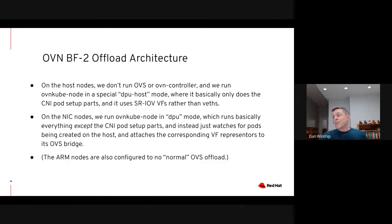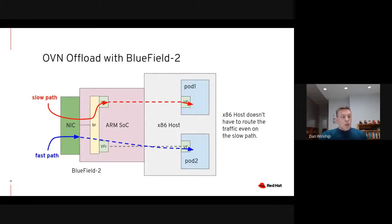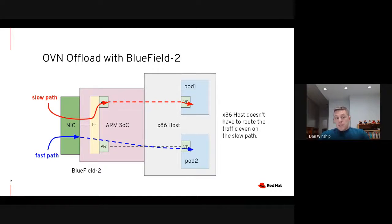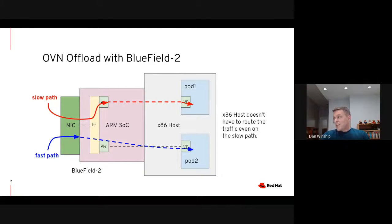The ARM nodes will also be configured to do the traditional OVS offload. So this is what we end up with — it's sort of a stretched-out version of the original offload diagram with the OVS bridge now running on the ARM system between the low-level parts of the NIC and the x86 host. The addition of the ARM system means that there's never any OpenFlow processing done on the x86 host. In the slow path, the packets go from the NIC to OVS running on the ARM system and then to a pod in the x86 system. In the fast path, the packets go from the NIC directly to the pod — the x86 host doesn't have to do any processing before the pod in either case.